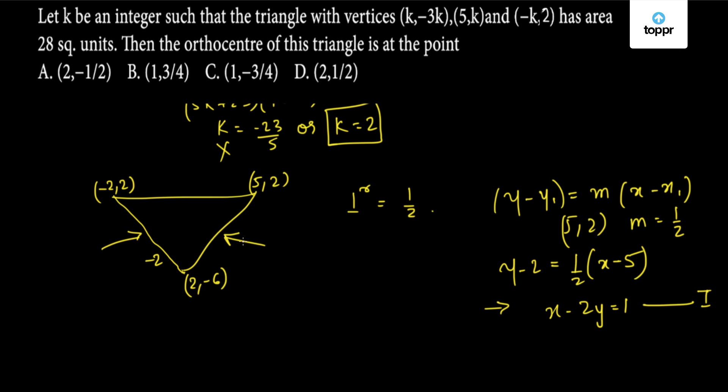Similarly, if we take the side of the triangle joining the points (5, 2) and (2, -6), we get the slope of this line as 8/3. The slope of the line perpendicular to this will be -3/8, and the point through which it passes is (-2, 2). Using the same form we get y - 2 = (-3/8)(x + 2). This comes out to be 3x + 8y = 10. This is equation 2.